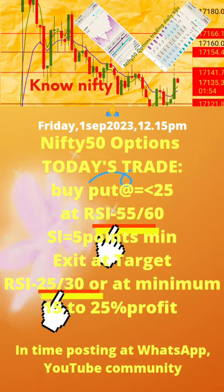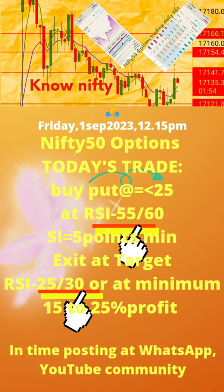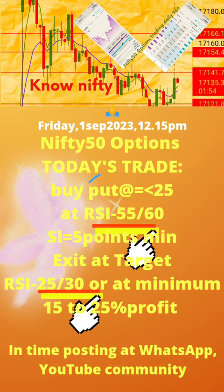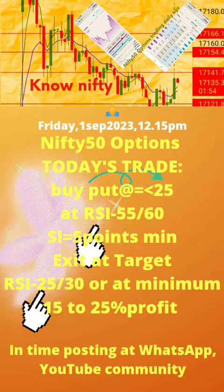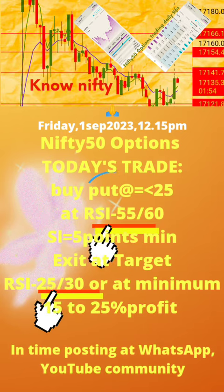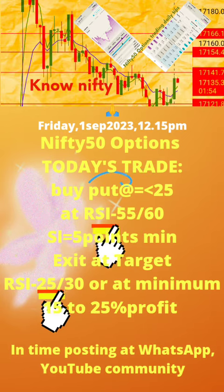Please note: 1. Today's time of post is also mentioned. 2. Buy put or call off strike price with premium value equal to or less than 25, at RSI value updated daily. 3. Apply stop loss of minimum 5 points.